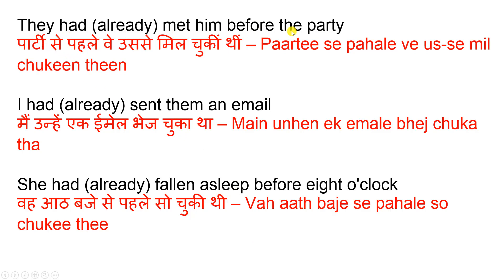Third tense category — past perfect. 'They had already met him before the party': 'Party se pehle ve usse mil chuki thiin.' 'Party se pehle' is before the party, 've' is they, 'usse' is him, 'mil' is the root verb for meet, and 'chuki thiin' because they constitutes all females. So 'mil chuki thiin' means had already met.